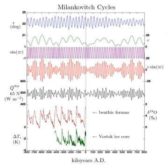Finally, the direction in the fixed stars pointed to by the Earth's axis changes — axial precession — while the Earth's elliptical orbit around the Sun rotates. The combined effect is that proximity to the Sun occurs during different astronomical seasons.